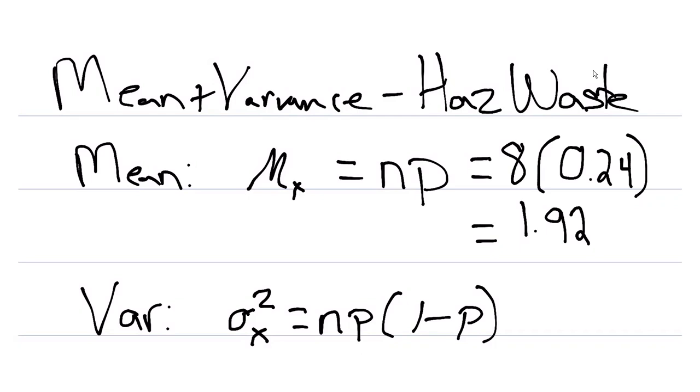For the variance, we can do something similar. We still need to know what n and p are. And so here, again, remember we have 8 and 0.24. And then we multiply that by 1 minus p, or 1 minus 0.24. Then when we calculate that out, we'll get 1.4592.